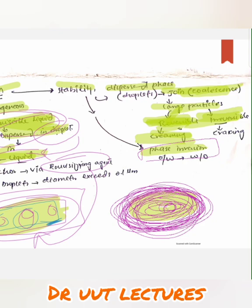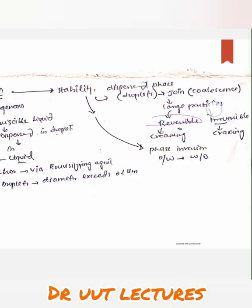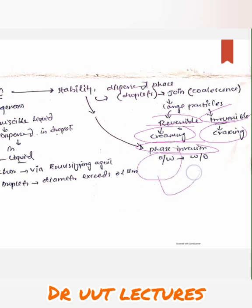...then a new type of emulsion is formed, called water-in-oil, because the oil is now more than the water. We increased one phase and decreased the other — this is a man-made change, and it is called phase inversion stability disorder. So we have three types of stability disorders: reversible (creaming), irreversible (cracking), and phase inversion, in which the phase changes from oil-in-water to water-in-oil.